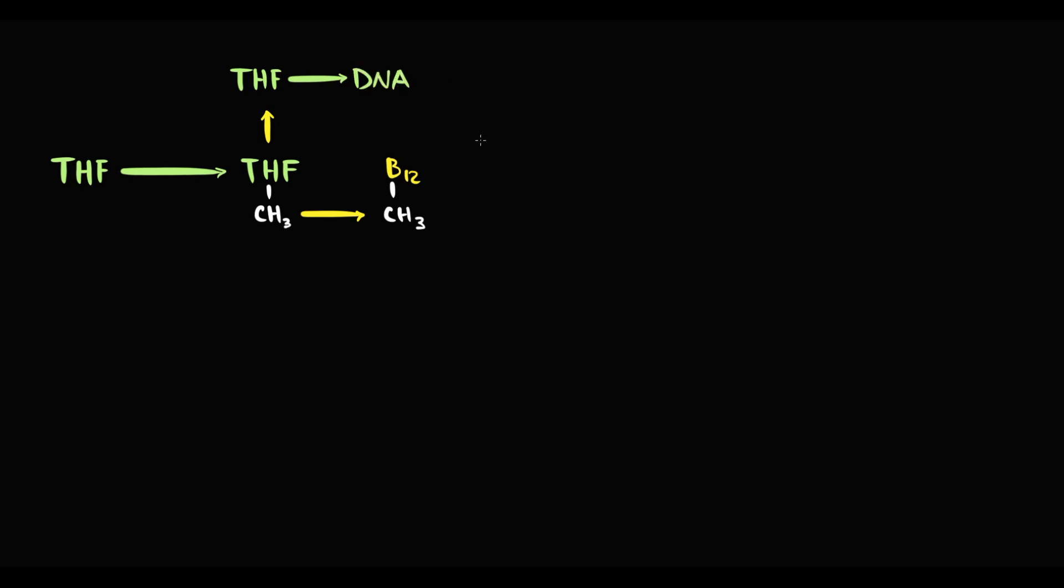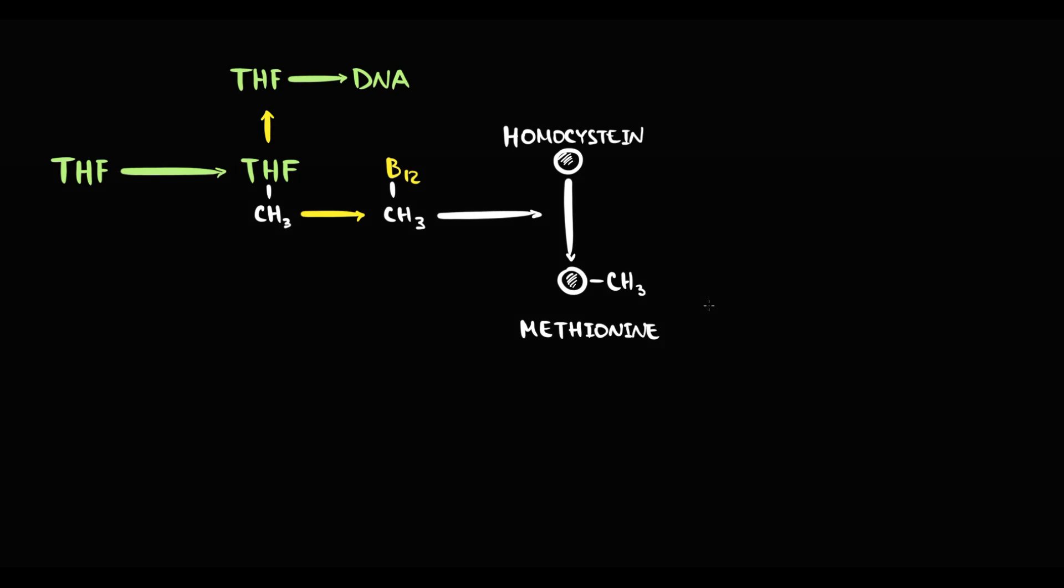But vitamin B12 also does not like to be methylated. So vitamin B12 transfers this methyl group into homocysteine, which results in formation of methionine. So we need both folate and vitamin B12 for production of DNA molecule, which is essential for mitosis of red blood cells.